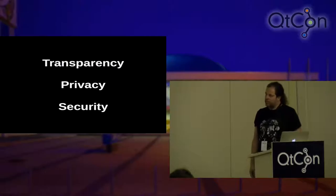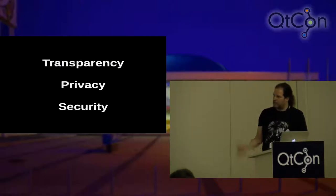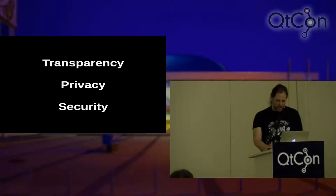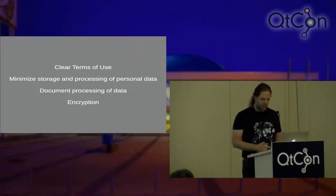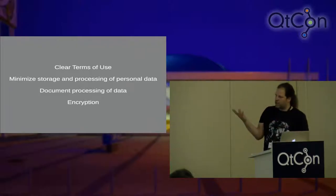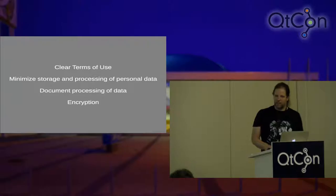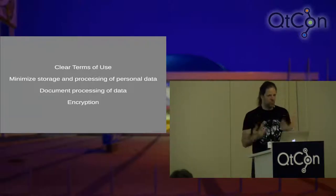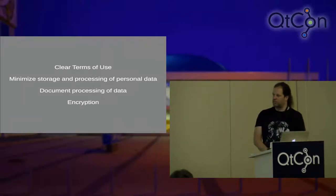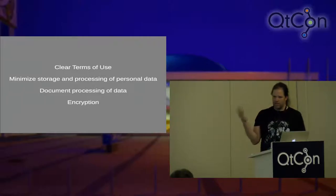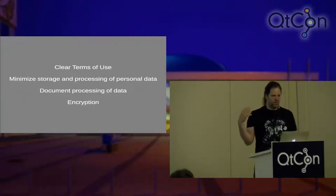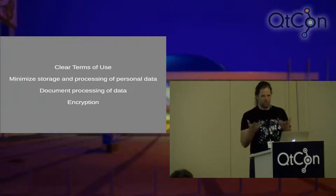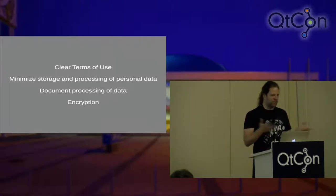Three other important criteria — transparency, privacy, and security. It has to be clear what the terms of use are. We have to minimize storage and processing of personal data — that's what the German law requires. It has to be transparent how and where the data is processed, so I know under which jurisdiction it is and whether the American government can access it. For security, one aspect is encryption — the data should be encrypted when I access it on the server.